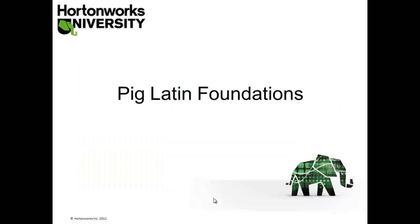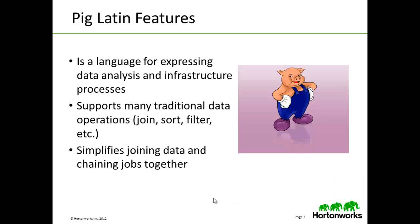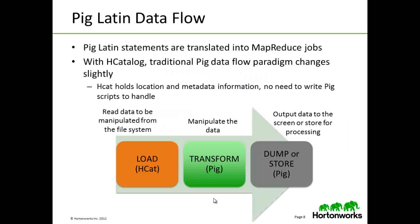PIG Latin is a language for expressing data analysis and infrastructure processes. It supports many traditional operations such as join, sort, filter, etc., and simplifies the joining of data and the chaining of jobs. PIG Latin statements are translated into one or more MapReduce jobs. With HCatalog, the traditional PIG dataflow paradigm changes slightly — HCatalog holds the location and metadata information, so there is no need to write a PIG script to handle the data flow.